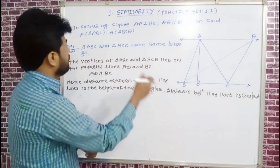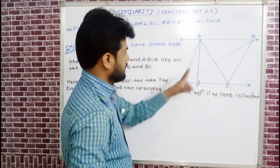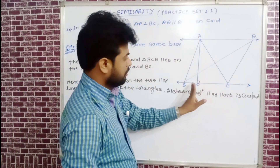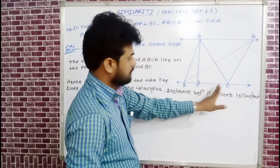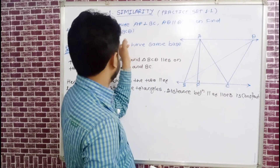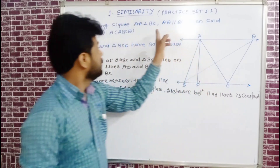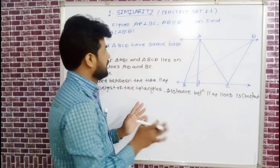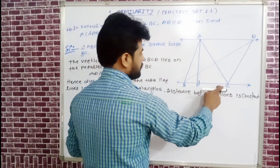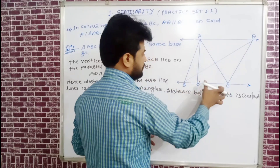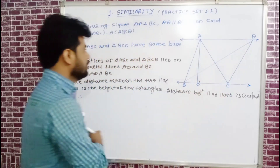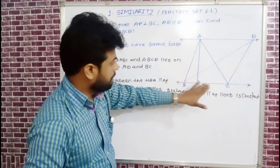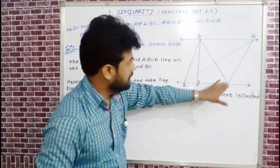Example 4: In the following figure, AB is perpendicular to BC. Find the ratio of area of triangle ABC to area of triangle BCD. Both triangles ABC and BCD share the common base BC.